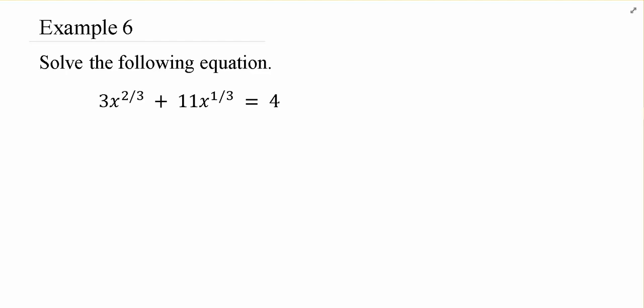Here's another example of where u substitution is going to come into play. And again, we're going to notice that there is some sort of variable, and then the other variable is that squared.